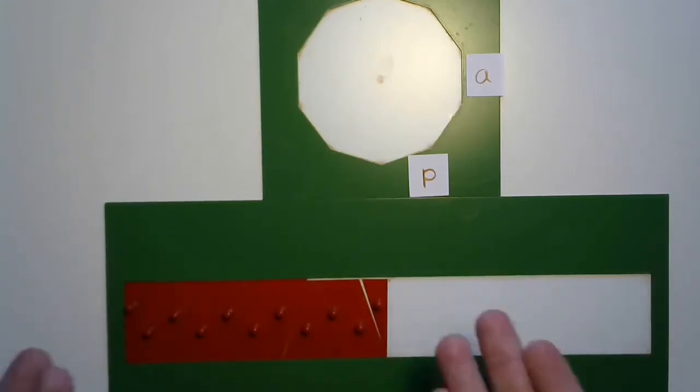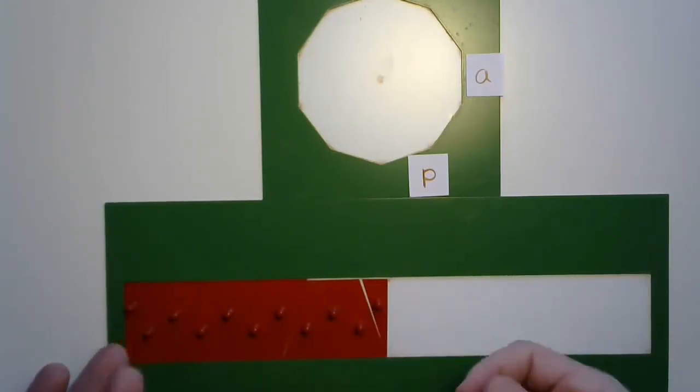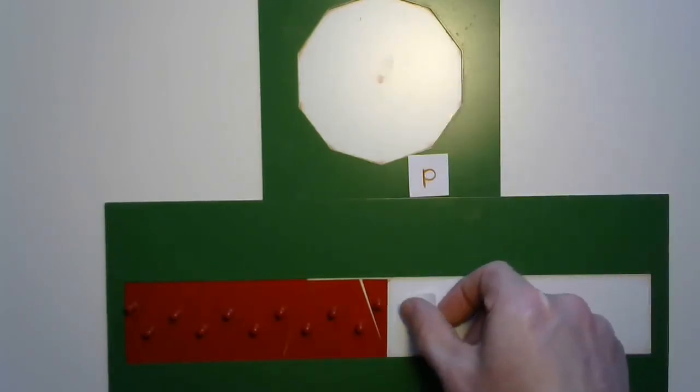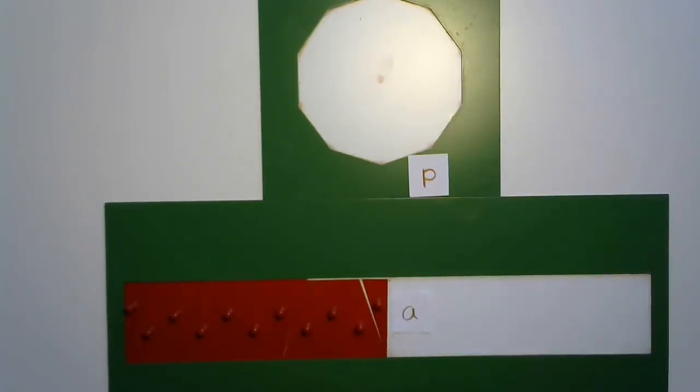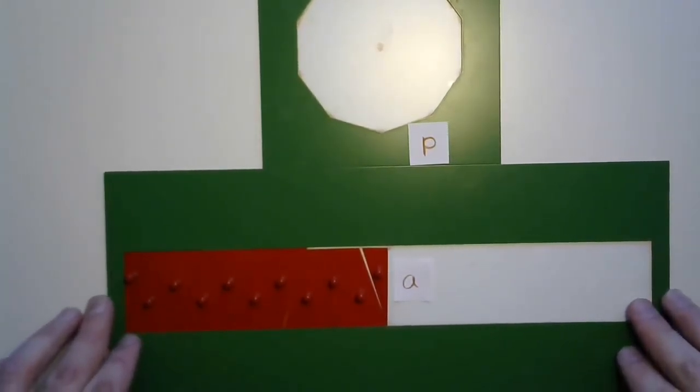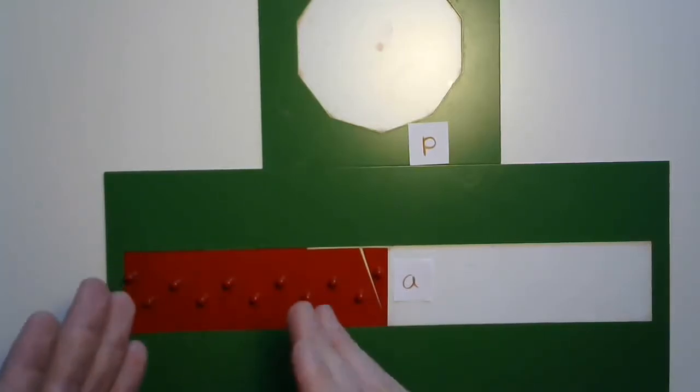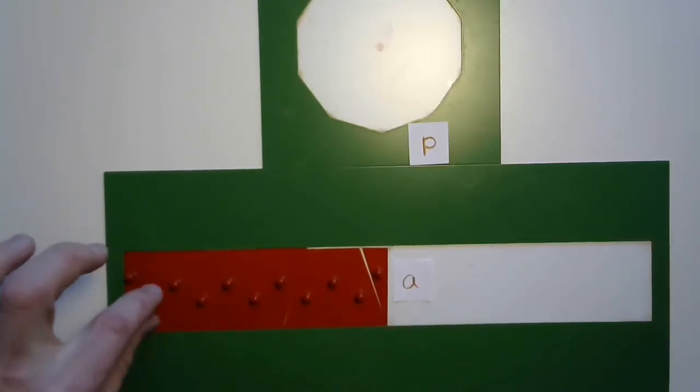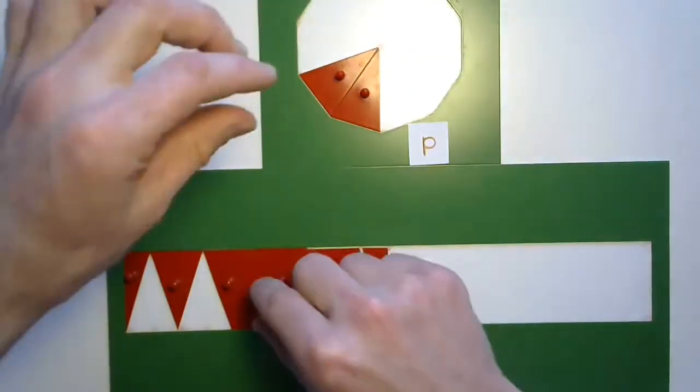So where did the height come from for this rectangle? Right from that apothem. Where did the base of this rectangle come from? This one's going to be a little bit tougher. You might say the perimeter, but is it the entire perimeter? Let's just double check and see what happened here.